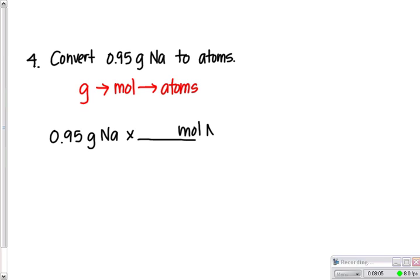On the bottom is grams of NA. And if you look at your chart, when we go from moles to grams, we need to look at the periodic table. So, 1 mole, if you look at the periodic table, has 22.99 grams of sodium. Okay?